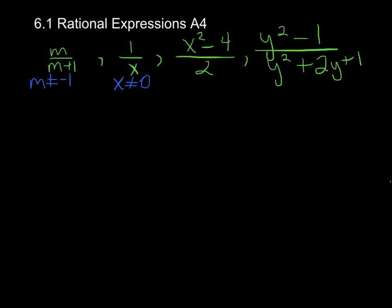In this third example here, we've got x squared minus 4 over 2. Well, you don't have a variable in the denominator, so you're okay. You don't have any restrictions on this. So technically here, we've got x can be any element in the real numbers. So we're okay with that.